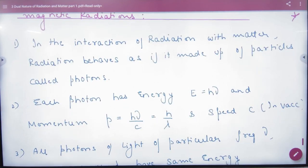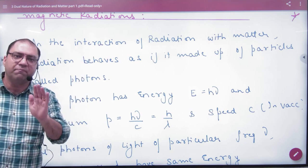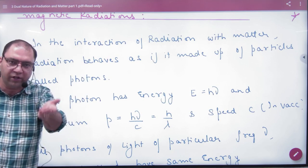The first point is, in the interaction of radiation with matter, radiation behaves as if it is made of a particle called photon. So, photon picture means that radiation is made of a particle. What do you call that particle? Photon.